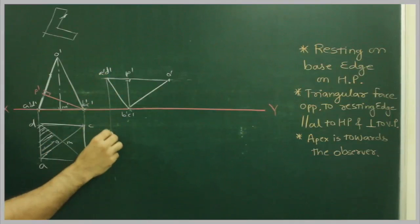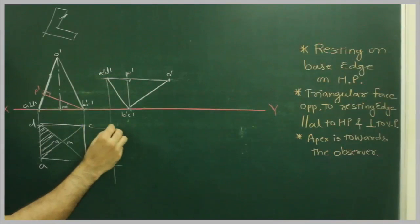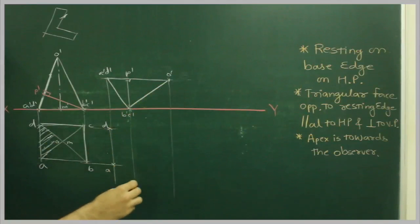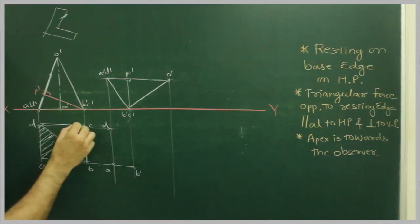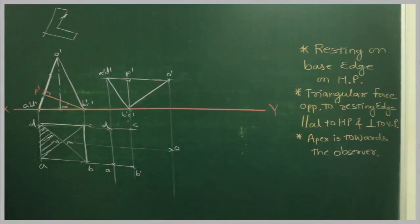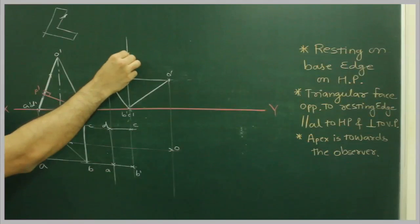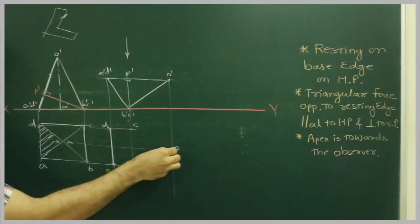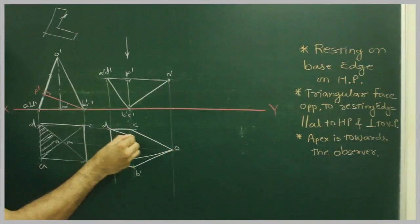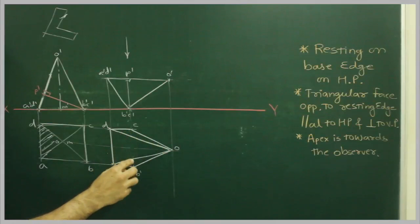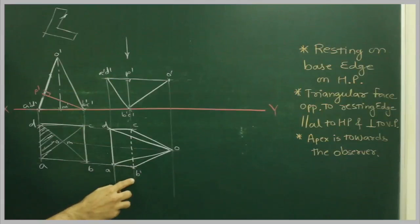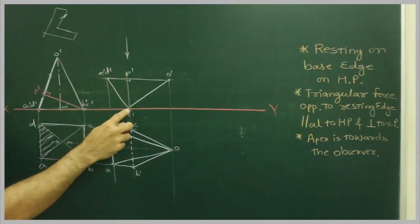After that, we will project A dash B dash from here, and A and D from here, so we will get D and A. Similarly, O dash from here and B dash C dash from here — extend B from here and C from here, and this is O. When the observer sees from the top, the extreme boundary would be visible, OA would be visible, OD would be visible, and B dash C dash would be dotted — because when you see from the top, it is away from you.